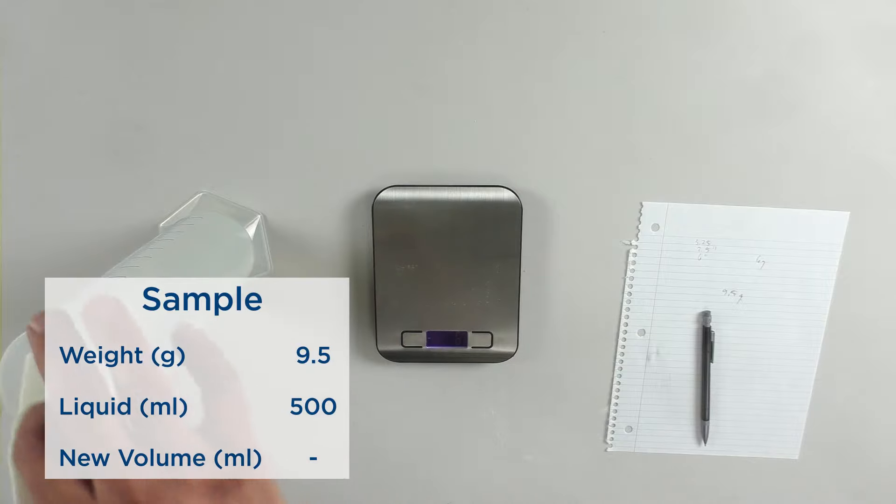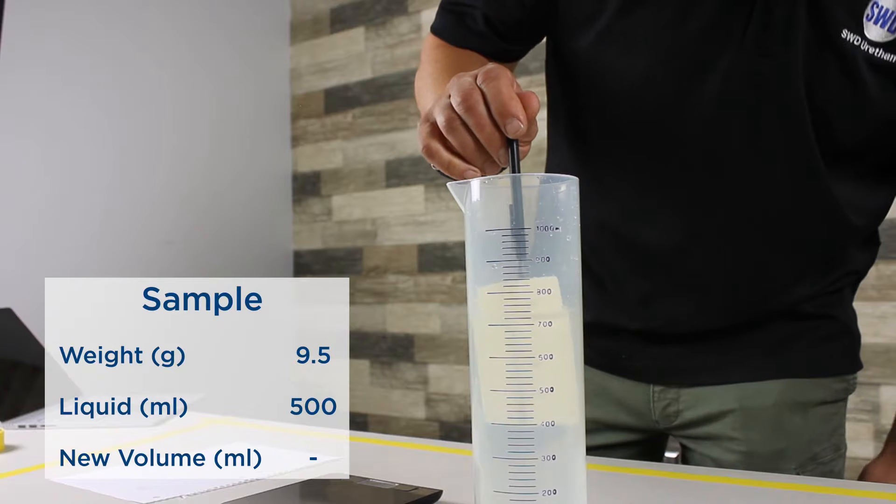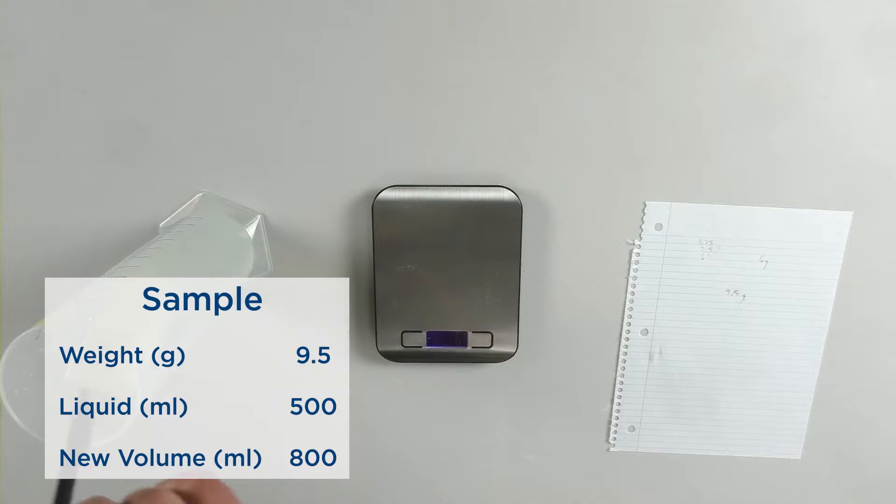After you weigh it, you go to the graduated cylinder and just use a pen or stick or whatever you've got to push it down so it just breaks the surface. This gives us about 800 milliliters.